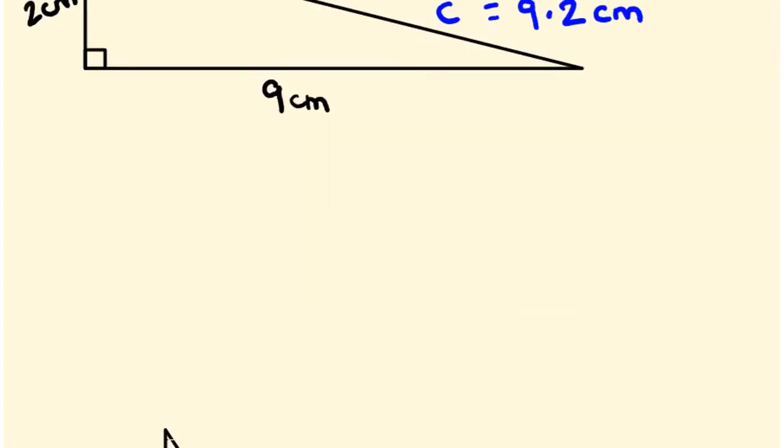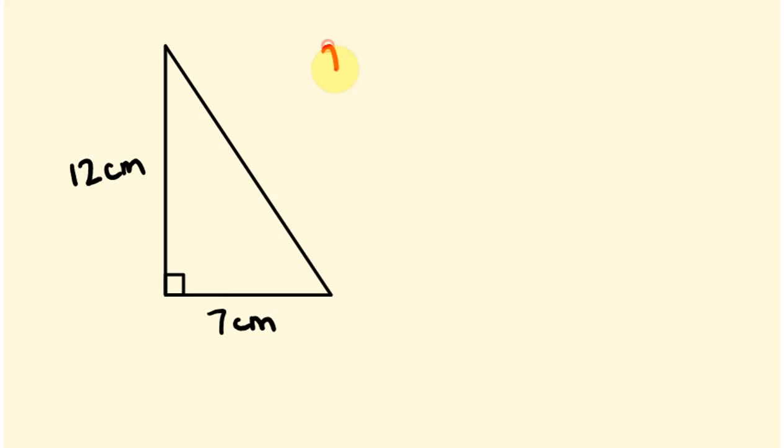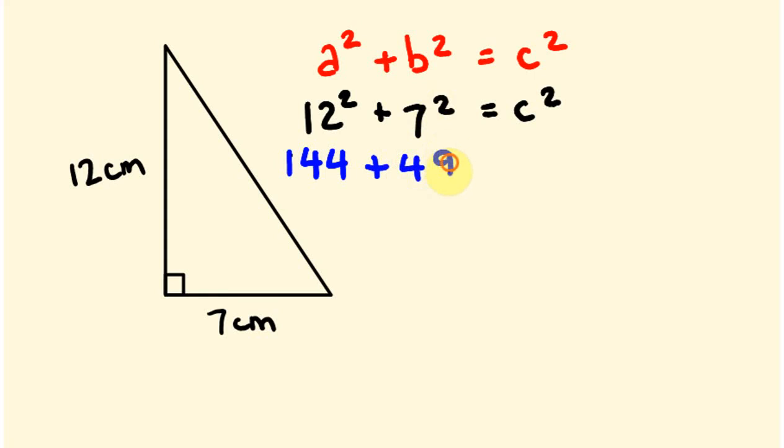Let's have a look at another example. So say we had here 12 centimeters and seven centimeters. Again the same formula, a squared plus b squared equals c squared. Let's substitute in some values here. So let's call a squared 12 here, so 12 squared plus b squared seven squared equals c squared. So 12 times 12 is 144 plus seven squared, seven sevens are 49, and this equals c squared.